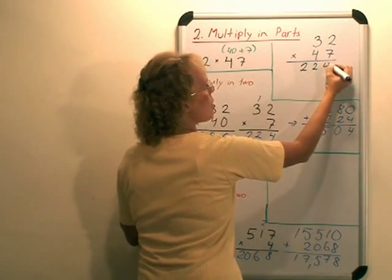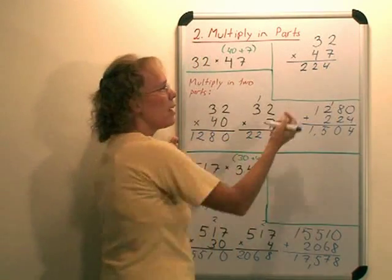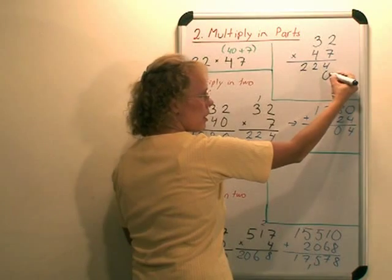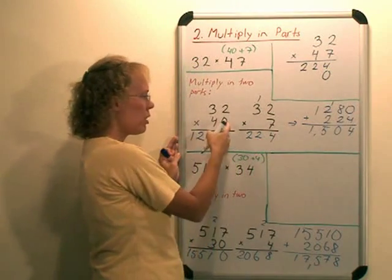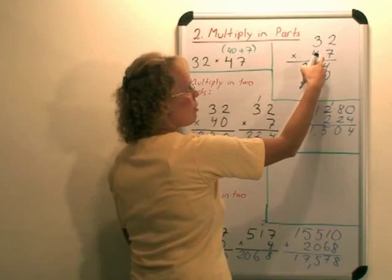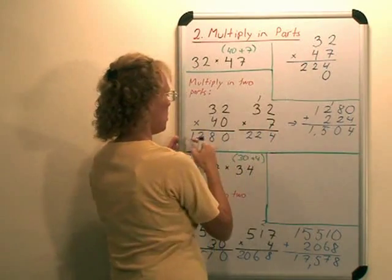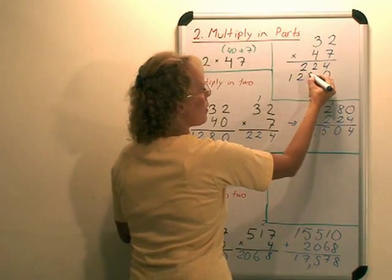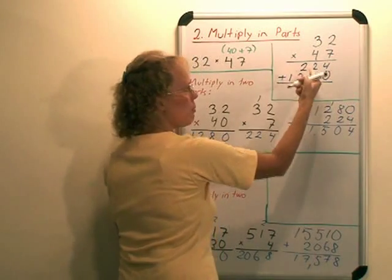We first go 7 times 32, which we already did here, so it is 224. And then in the second part, students are told to put zero here before they start. It's because it's a multiplication by 40. And then go this path, 40 times 32, and lastly the addition happens right here.